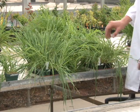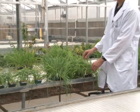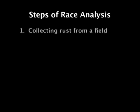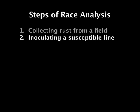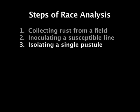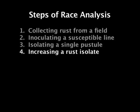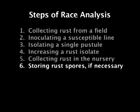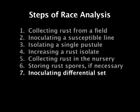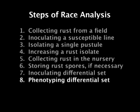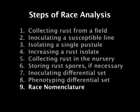The process of race analysis begins with a collection of rust from the field. This collection is then inoculated onto a plant that is a known susceptible line to rust, like line E. From this plant, a single pustule isolate is collected — or a few single pustule isolates — which are then increased, collected, stored if necessary, and inoculated onto a differential set. Using this differential set that has been inoculated with rust, the reactions are then phenotyped. Based on these phenotypes, the race can then be identified. We will now discuss each of these steps in detail.